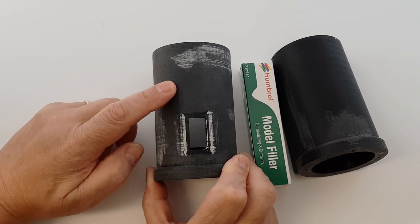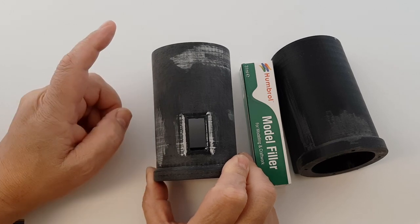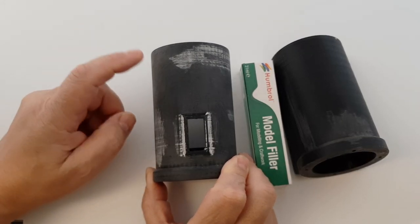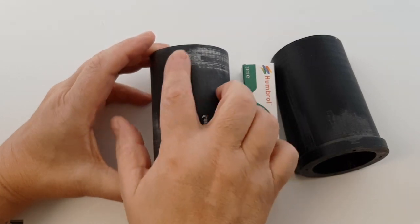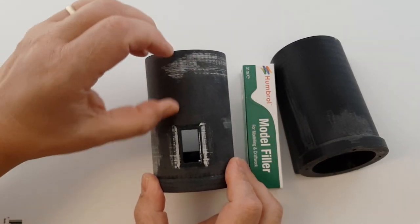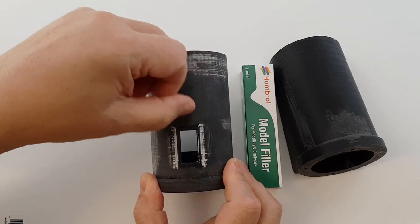I start out first with about a 120 grit sandpaper. Then go up to 600 grit wet and dry. And then I use this model filler to fill in any of the real rough spots. And you can hear it's much smoother.